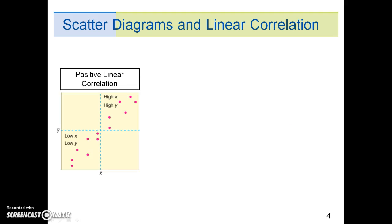The variables x and y are said to have positive correlation if low values of x are associated with low values of y and high values of x are associated with high values of y.